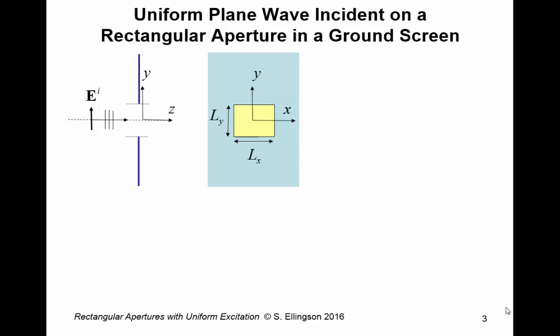Here's the problem statement. We have a uniform plane wave approaching from the minus z direction and traveling in the plus z direction. I've attached a Cartesian coordinate system. The plane of the ground screen is in the x-y plane. Looking from the plus z direction, we see the x and y axes, and a rectangular aperture with dimensions l_x and l_y. The plane wave is approaching from the normal or perpendicular direction relative to the ground screen — you can think of this as an aperture being backlit by a plane wave. What we're interested in is the fields on the other side of the ground plane, specifically in the far field.